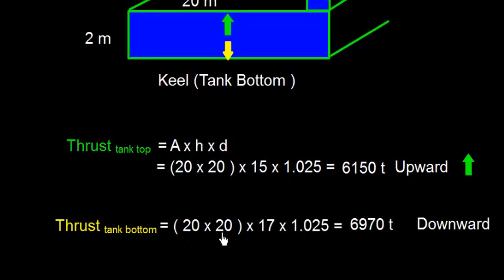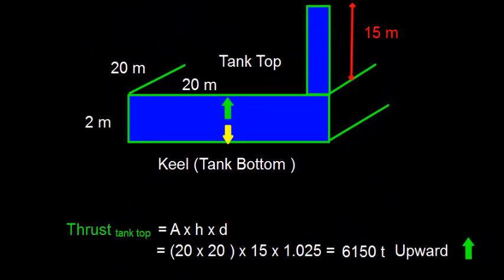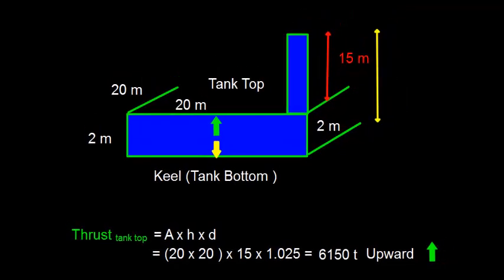15 into 1.025. Let me explain this 17. Well, the tank is 2 meter deep, so total distance is 15 plus 2, that is 17.